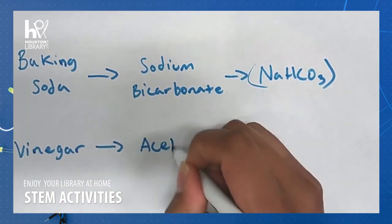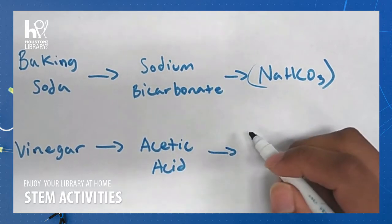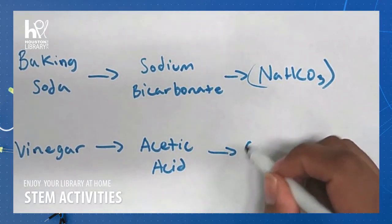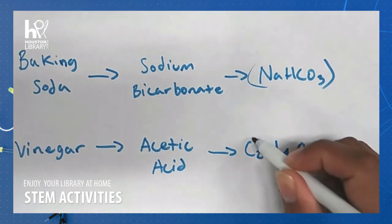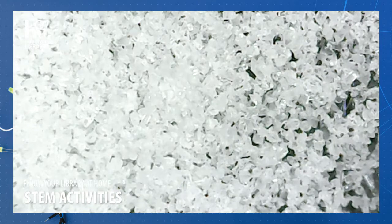And the chemical name for vinegar is acetic acid. The chemical formula is C2H4O2. And what this means is there are two carbon atoms, four hydrogen atoms, and two oxygen atoms in the formula.